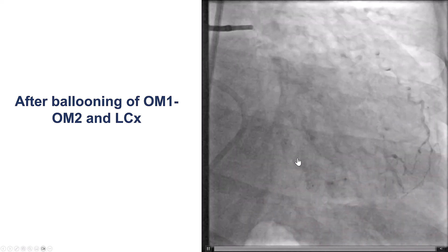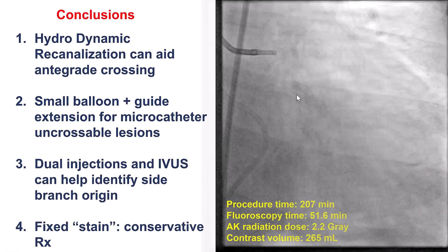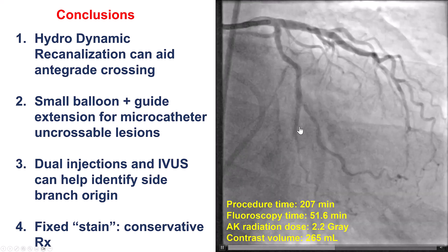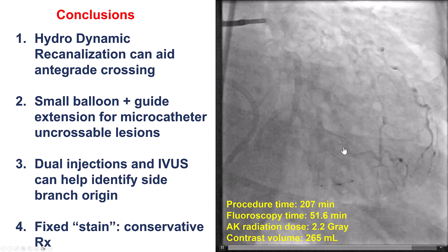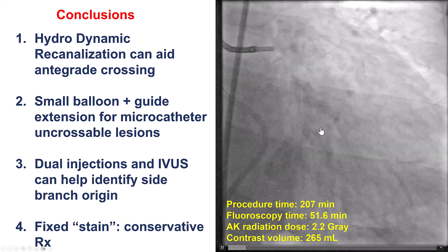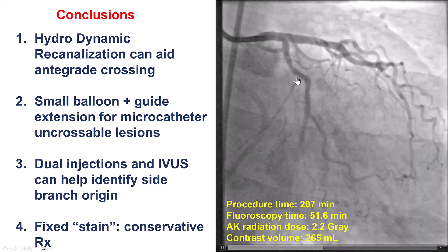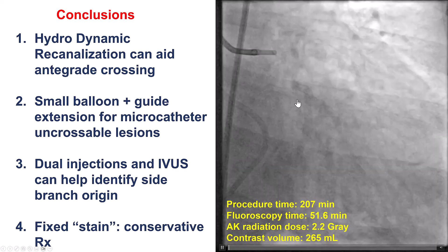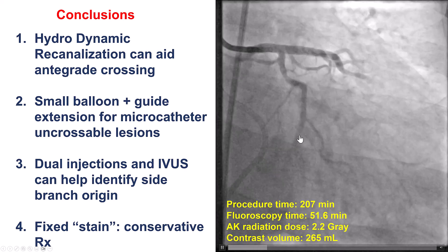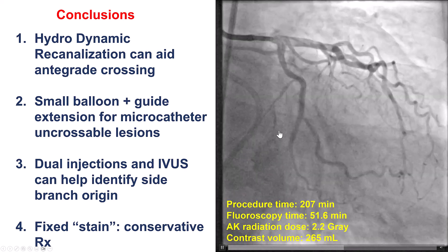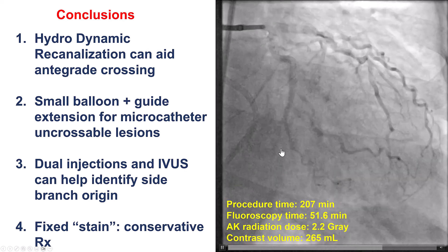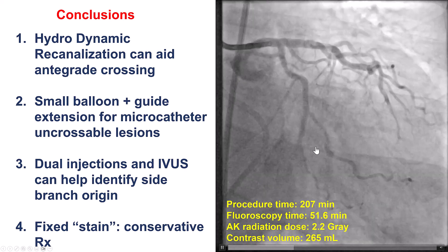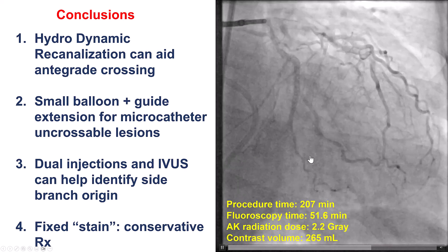We ballooned the two obtuse marginal branches as well as the circumflex. The result showed good flow in OM1 and good flow in OM2. The plan is to bring the patient back for drug-coated balloons. We decided to leave the distal circumflex, since we had adequate outflow for the first and second obtuse marginal branches.